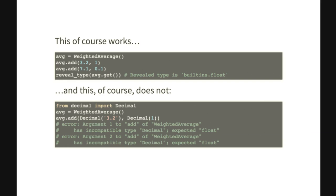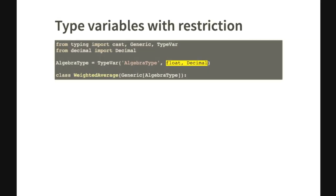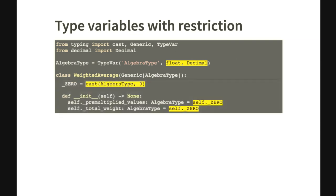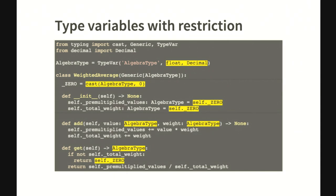If you want to allow floats or decimals, a good way to do that is to parametrize your weighted average — make it a generic class, parametrized by a type variable we called AlgebraType, restricted to either be a float or a decimal. Your original class will be very similar to the previous version, but you'll have a small trouble with the number zero. This code block contains a very small lie — maybe some of you can see it — but it's not very important. It works.